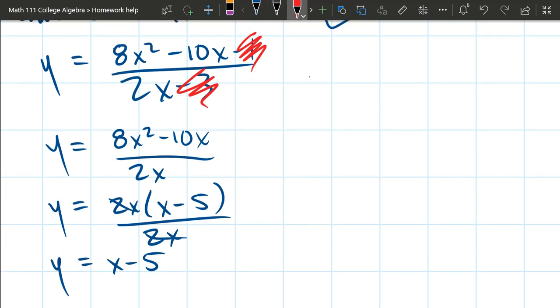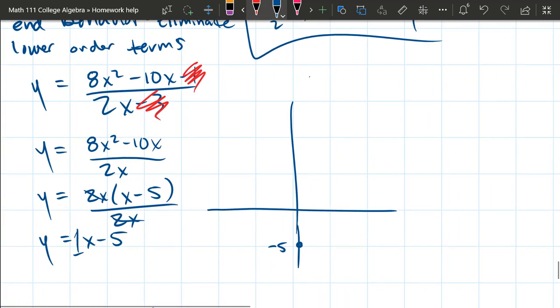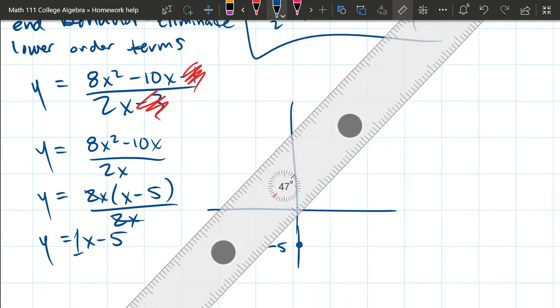All right. So what did keeping the 10x actually do up in the numerator? So that negative 10x actually turned into our y-intercept of our line. So if I was going to graph this function and I want to be super accurate about the end behavior, I would go down 5. So we'll say that's negative 5. Our slope is going to be 1.